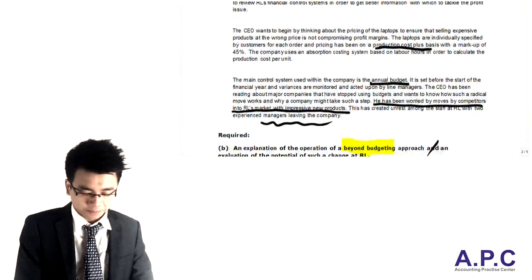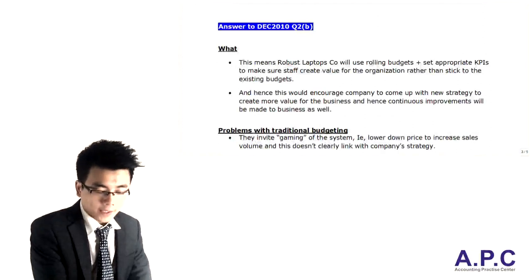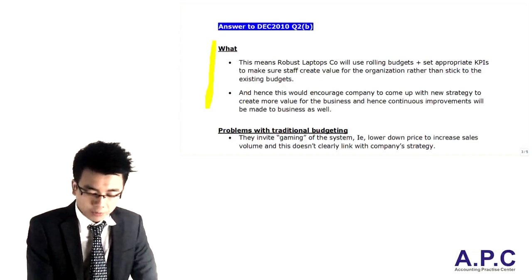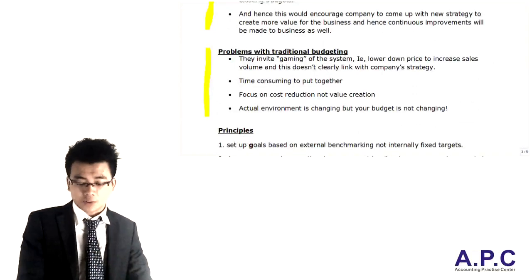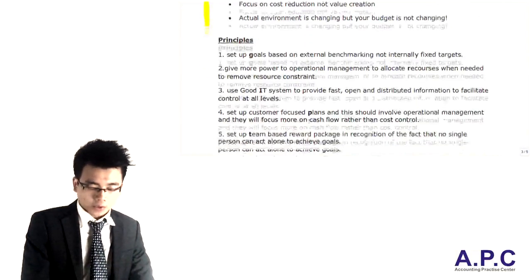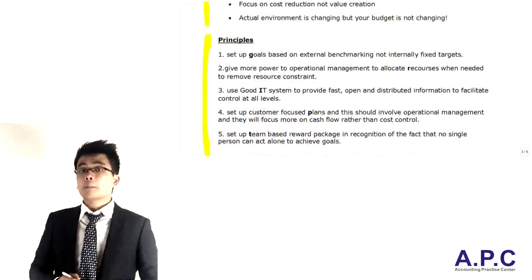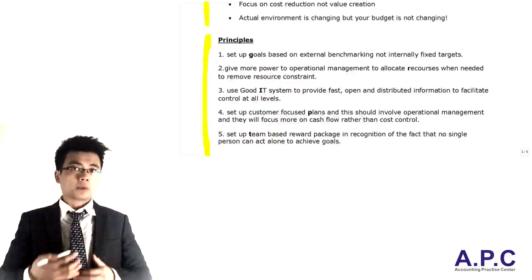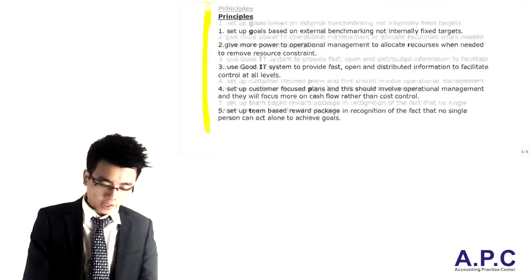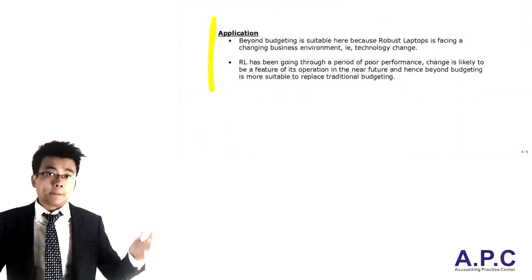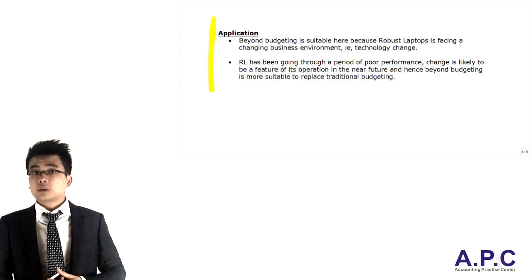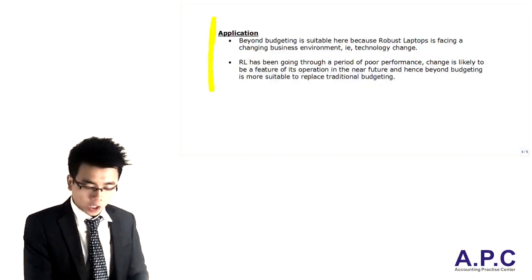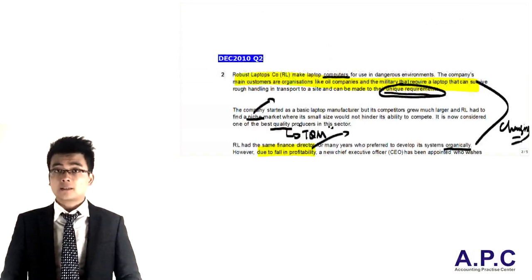So, how we're going to answer this question is: first, talk about what Beyond Budgeting is, as in your study notes. Second, the problems with traditional budgeting. Third, talk about the principles for implementing Beyond Budgeting, and apply the company name to each of the principles. Finally, the application to the scenario — it's suitable because it's changing and because of poor financial status within the company. Using Beyond Budgeting may be suitable. So we've finished the December 2010 question number two.